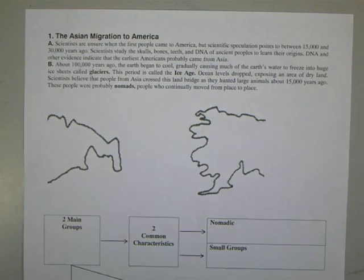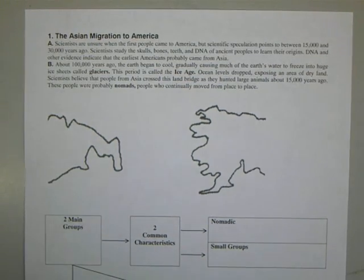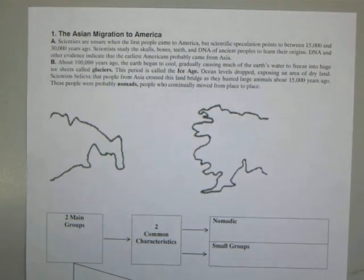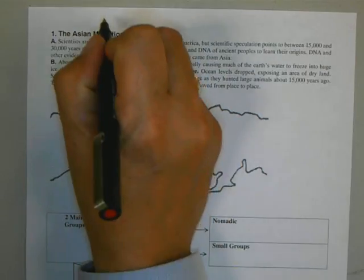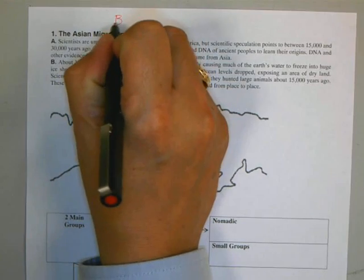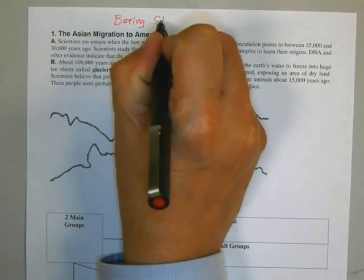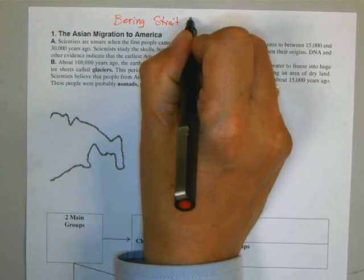Let's go ahead and get started. As we can see right here, this is going to be known as the Asian Migration to America. This is also known as the Bering Strait Theory.